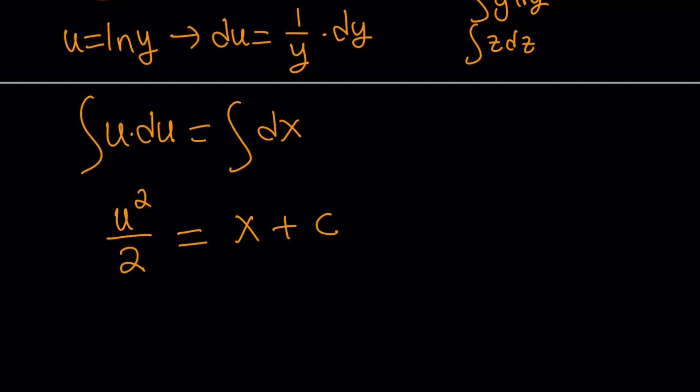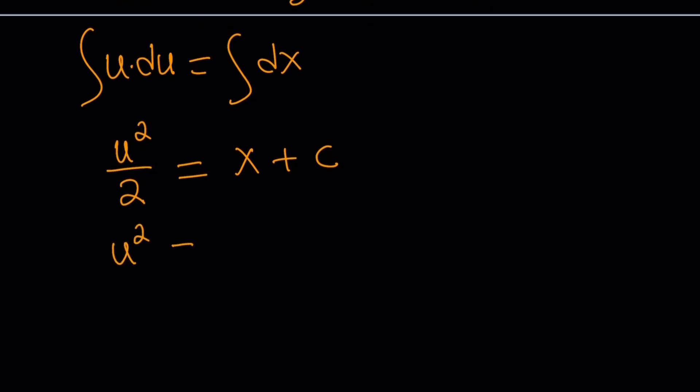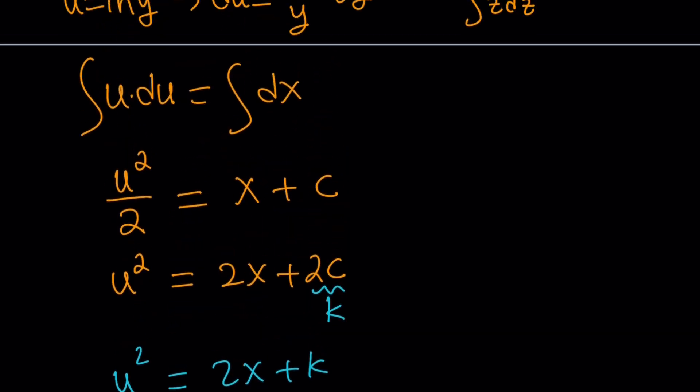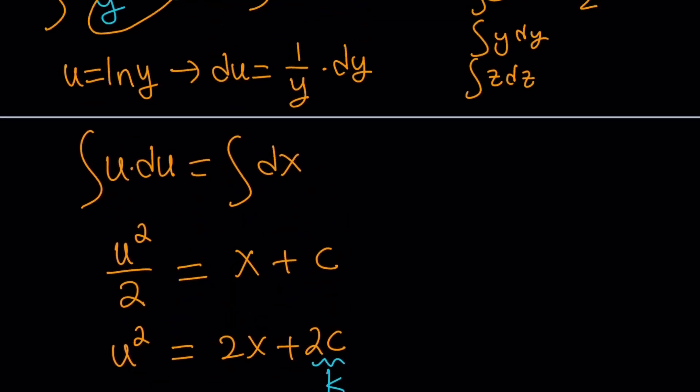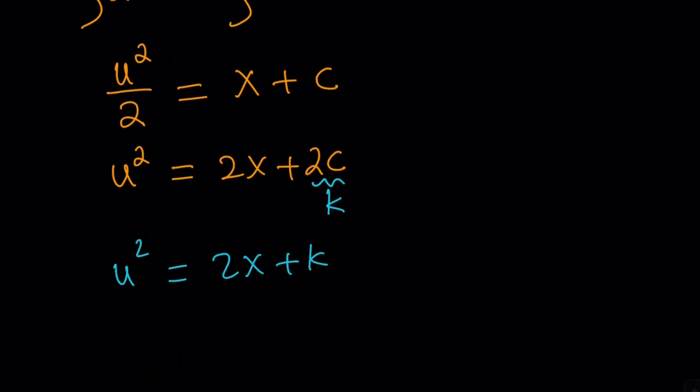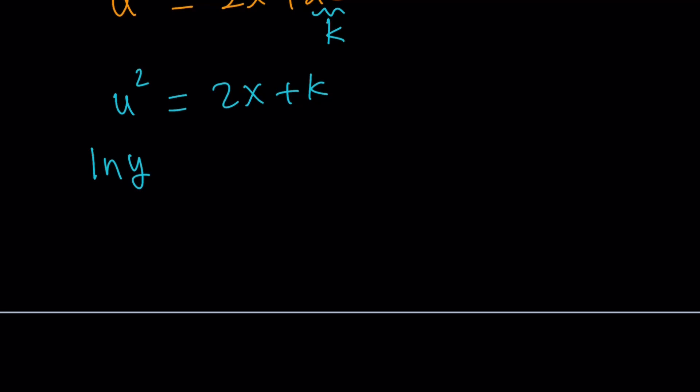Multiply both sides by 2 to isolate u squared. If you want, you can replace 2c with another constant like k. Then you get u squared equals 2x plus k. What is u? U is ln y. So let's back substitute: ln y squared equals 2x plus k. This should give you two solutions because when you square root, absolute value kicks in. You can put a plus minus sign. ln y is going to be plus minus the square root of 2x plus k.